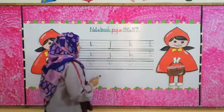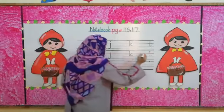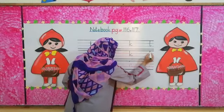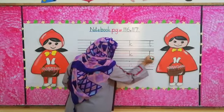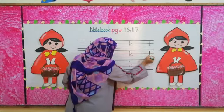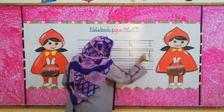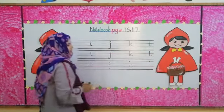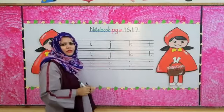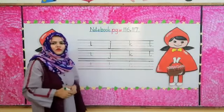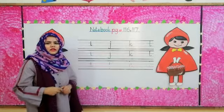What comes after K? L. First come down and do a stroke, then go up. This is letter L, and the sound of L is L.